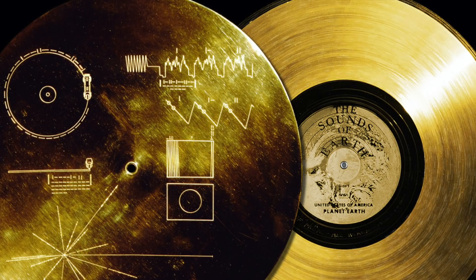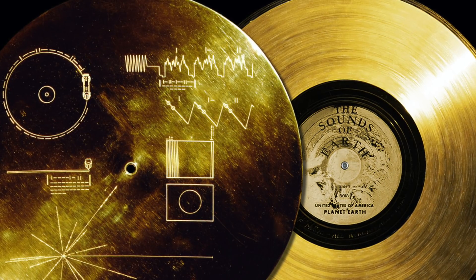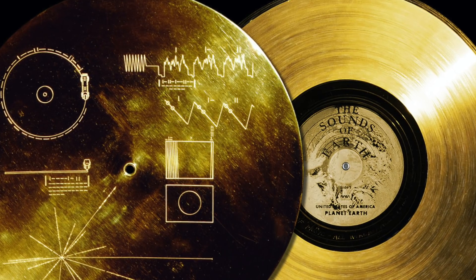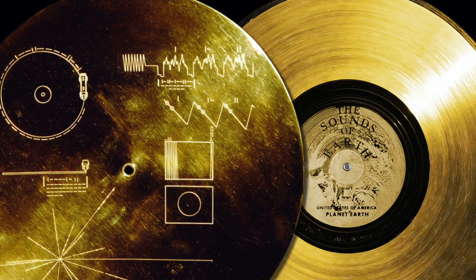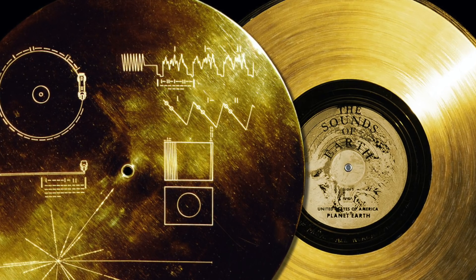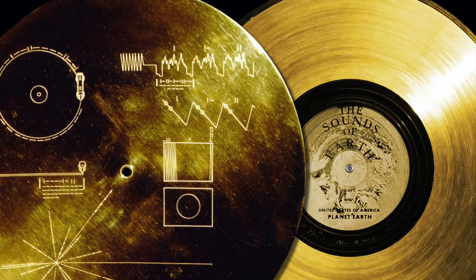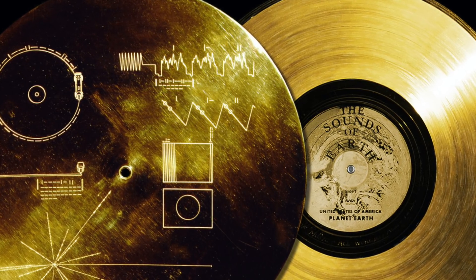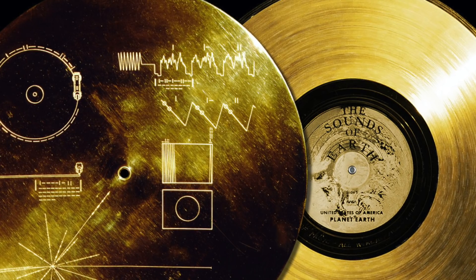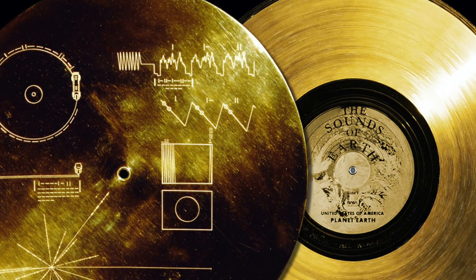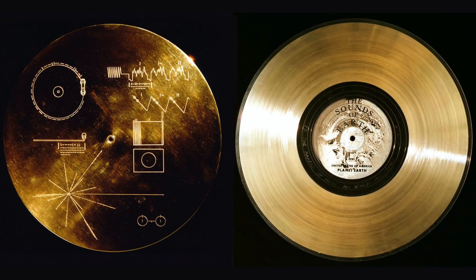NASA continued with the following on their website: A Golden Phonograph record was attached to each of the Voyager spacecraft. One of the purposes was to send a message to extraterrestrials who might find the spacecraft as it journeyed through interstellar space. In addition to pictures and music and sounds from Earth, greetings in 55 languages were included.